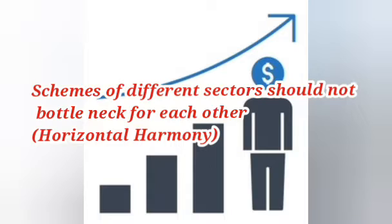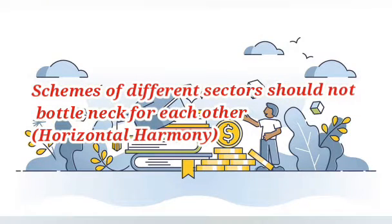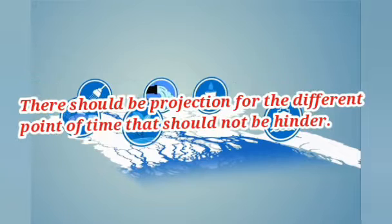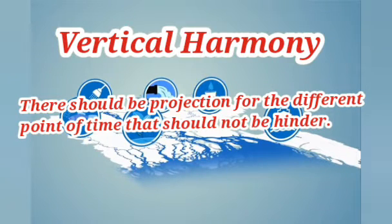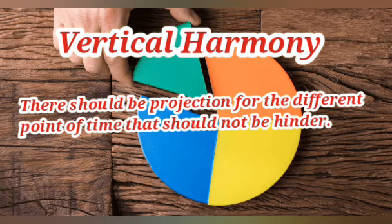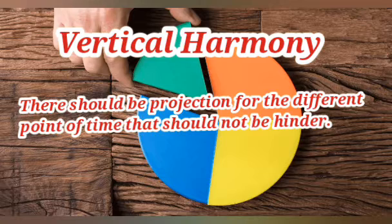Horizontal harmony means that the schemes of different sectors should not bottleneck each other — different sectors must be coordinated. Vertical harmony means that the projections for different points in time should not hinder one another — the scheme at different points in time should not conflict with the plan's projections. So horizontal harmony considers different sectors, and vertical harmony considers different time periods.